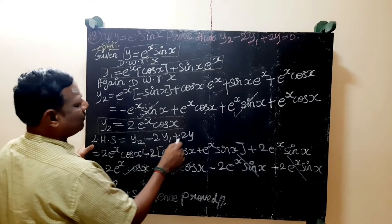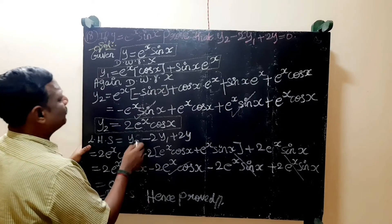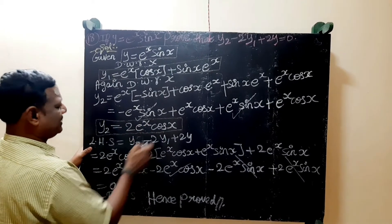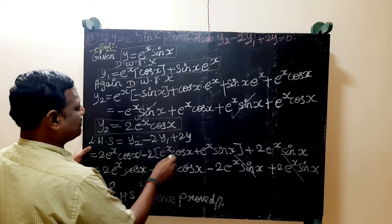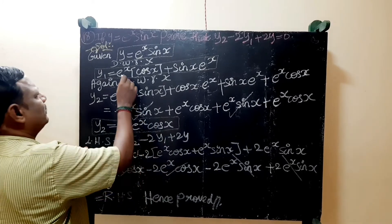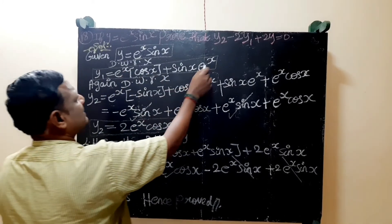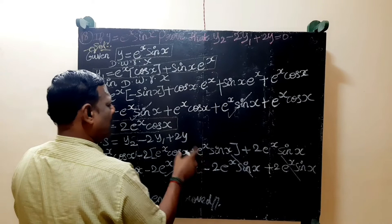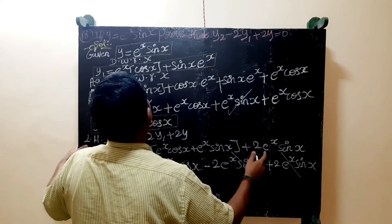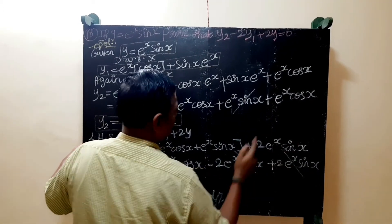y2 minus 2 times y1 plus 2y. 2e power x cos x minus 2 times of y1 which is e power x cos x plus e power x sin x plus 2 times of y, y is equal to e power x sin x.